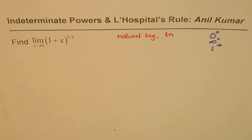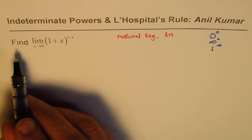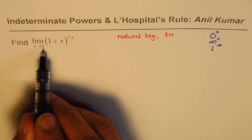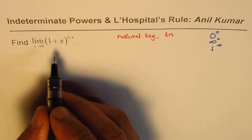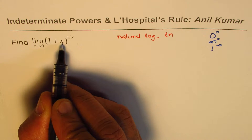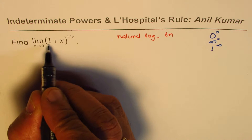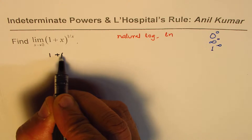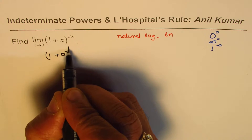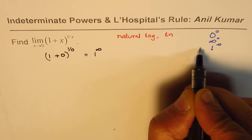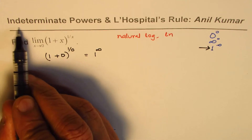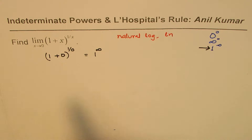Here we have to find the limit as x approaches zero for one plus x to the power of one over x. If I substitute zero for x, we get one plus zero to the power of one over zero, which is one to the power of infinity. So this is in the category of indeterminate powers.